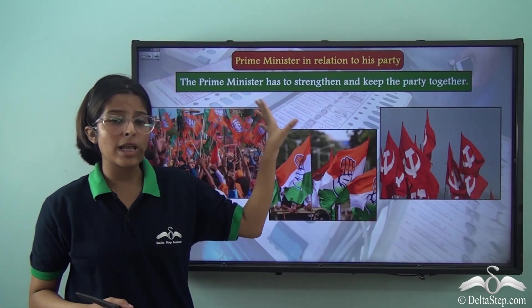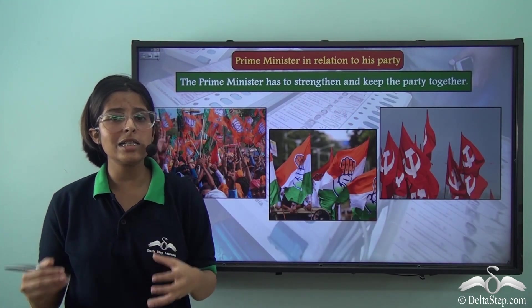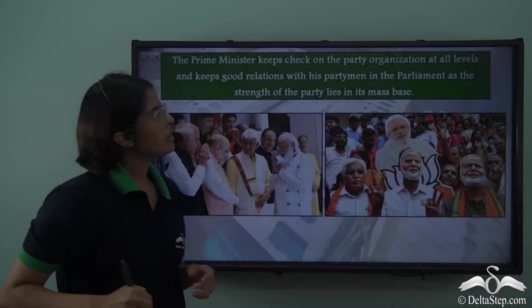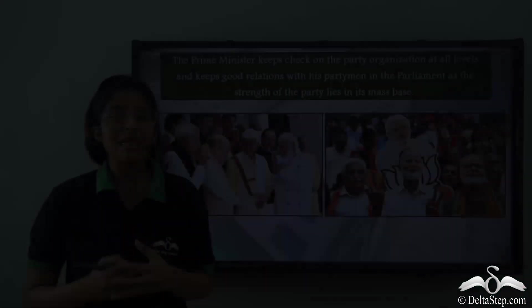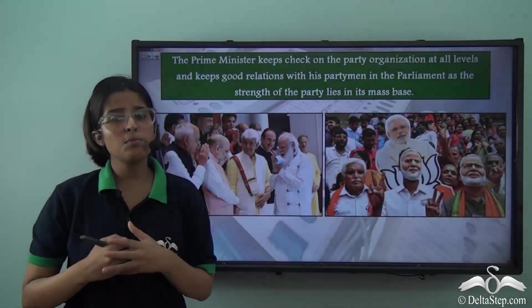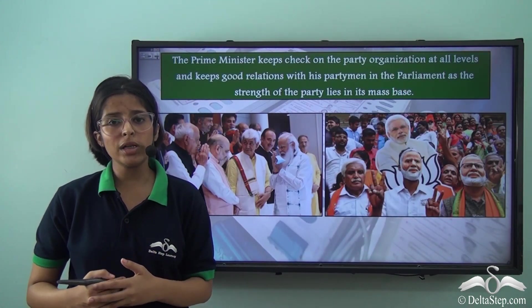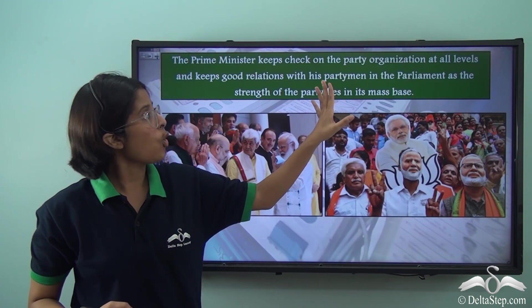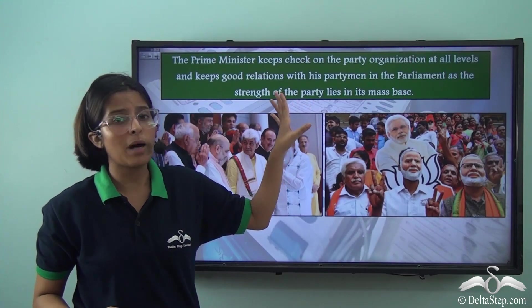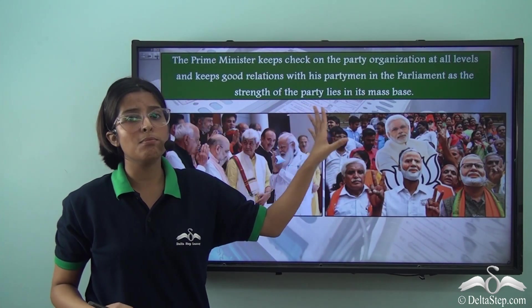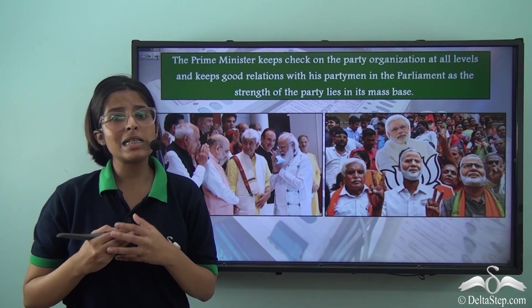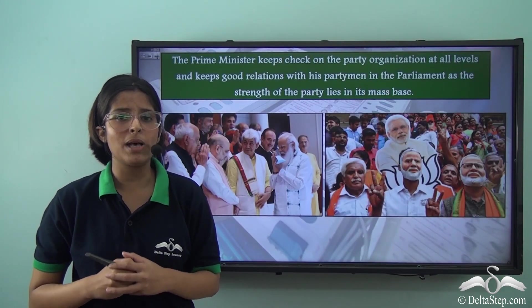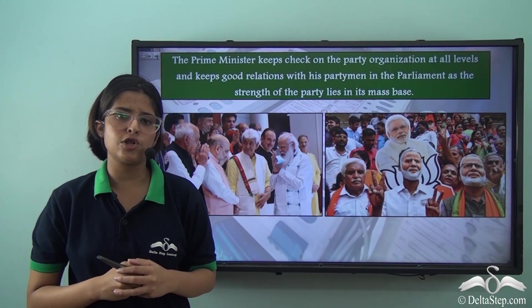The Prime Minister has to strengthen and keep the party together. Since he is the leader of his party or coalition, he has to make sure that he is on good terms with all his party members. Since the Prime Minister is from a specific party, he is its representative to the country, so he ensures the party is organised at the local, state or national level. He keeps check on the party organisation at all levels and maintains good relations with his party men in Parliament, as the strength of the party lies in its mass base.